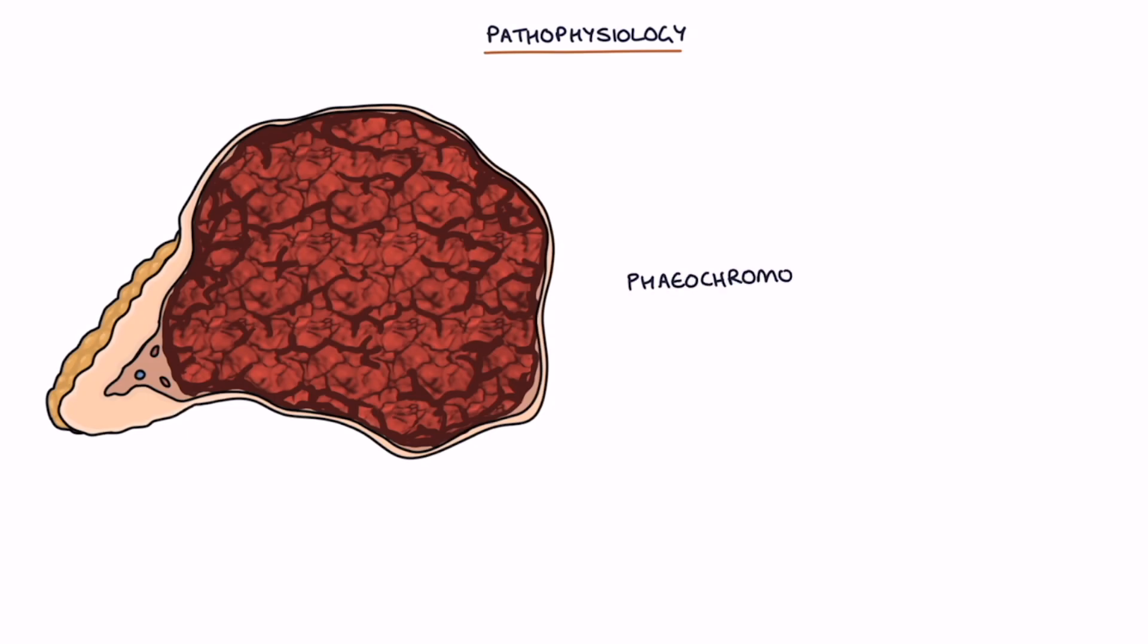A pheochromocytoma is a tumour of the chromaffin cells that secretes unregulated and excessive amounts of adrenaline. In patients with a pheochromocytoma, the adrenaline tends to be secreted in bursts which gives intermittent symptoms.